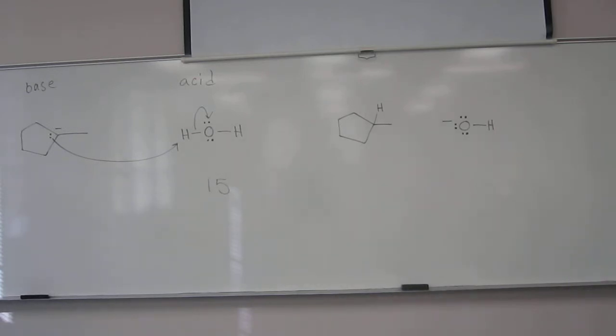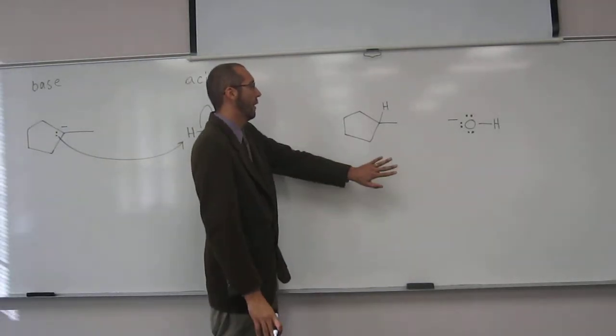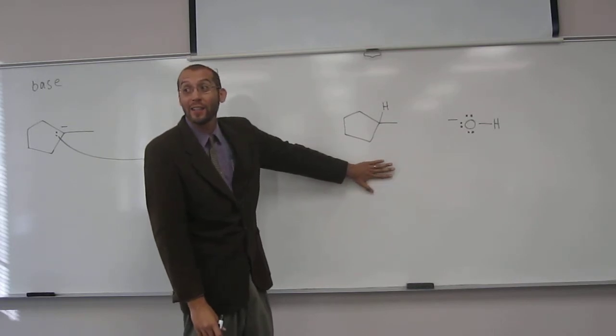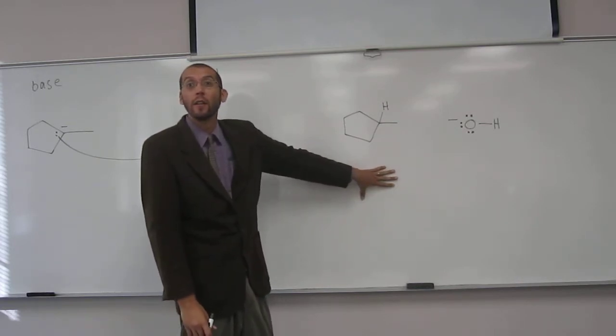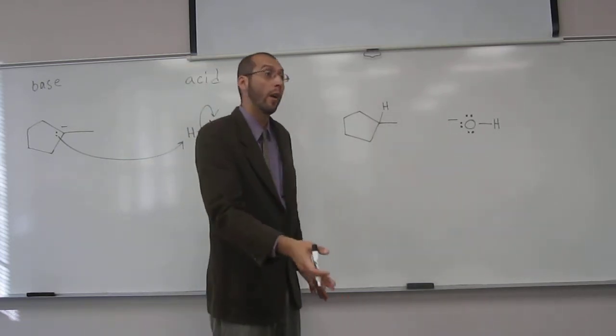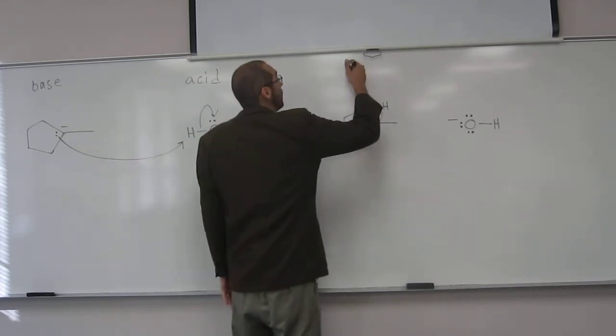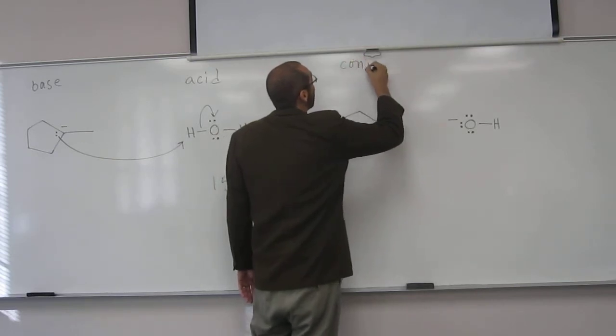So the right one is the conjugate base? Yeah, so that's the next question. Thanks for leading me into that. Which one is the conjugate acid and which one is the conjugate base? So this is the what? Conjugate acid. Why would this be the conjugate acid? It's derived from base. Okay, you can think of it that way. Or it's got the proton now, the acidic proton. So base, acid, conjugate acid.